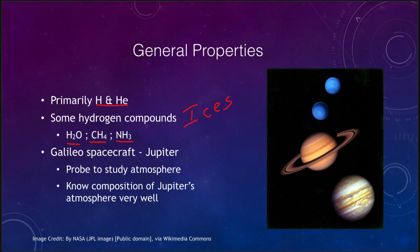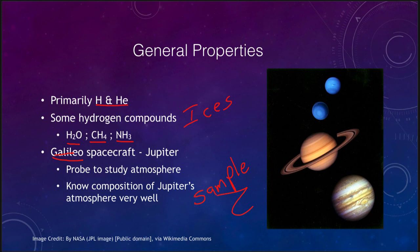The Galileo spacecraft, which studied Jupiter, actually sent a probe into its atmosphere. So we know the composition of that atmosphere very well because it's one of those things we've actually had the chance to sample. We've been able to study the atmosphere of Jupiter unlike the atmospheres of the other objects in the outer solar system. Jupiter's atmosphere, at least the portion that we sampled, is very well known.